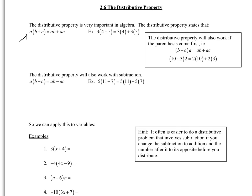Let's look at whether this truly does work with an example. On the left-hand side, you normally just use order of operations — you do what's in parentheses first, so 4 plus 5 gives 9, then multiply by 3 and get 27. What distributive property says is you can get the same exact answer if you take that 3 on the outside and multiply by each addend inside. So 3 times 4 is 12, 3 times 5 is 15, and adding them together gives you 27 — the exact same answer. So it does work.